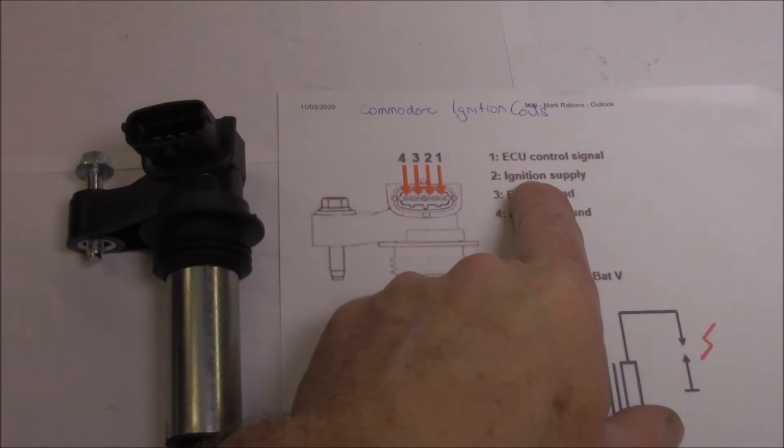Of course, we have an ignition supply, which would be 12 volts. And our control signal is testing it very similar to a normal three-wire ignition coil.